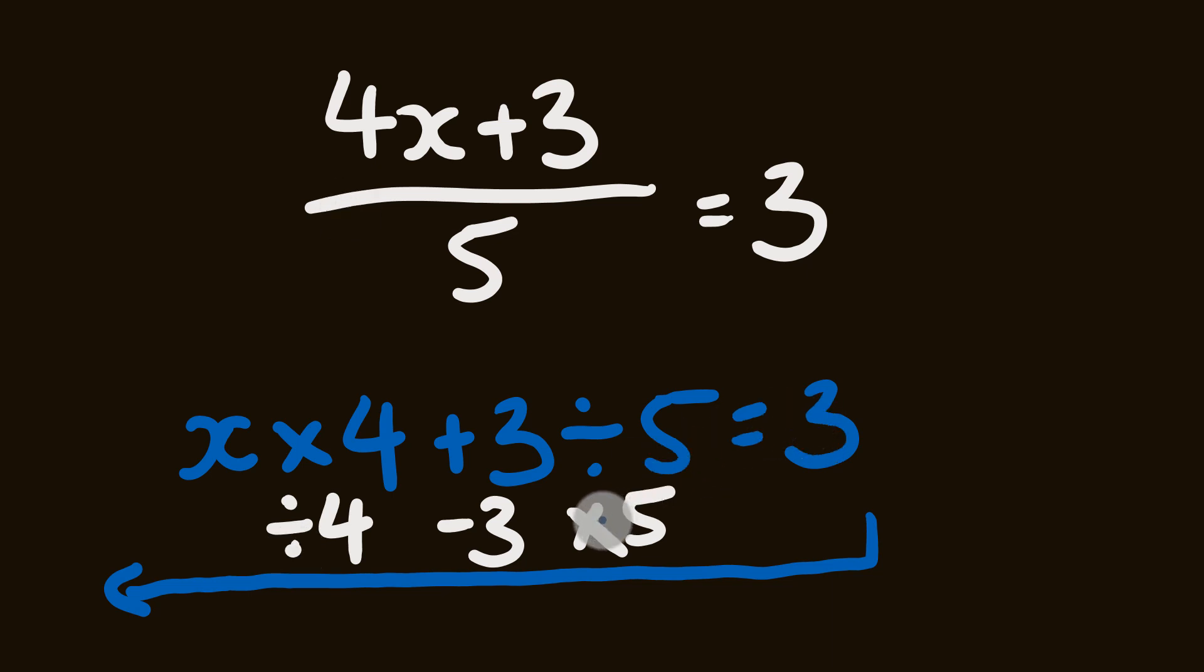So first off we have 3 multiplied by 5. 3 multiplied by 5 is 15. 15 minus 3 is 12. 12 divided by 4 we have our answer x is equal to 3. There you go. That's how you go through and do this and as you can see you could do this without even writing all this down. You could start just with the equation up here go 3 multiplied by 5 minus 3 divided by 4 and get your answer.